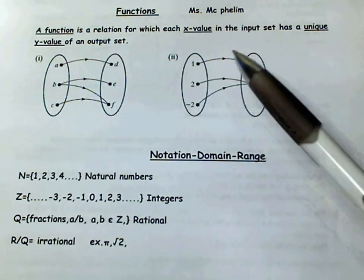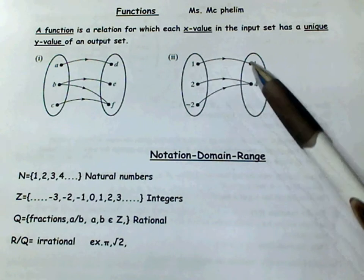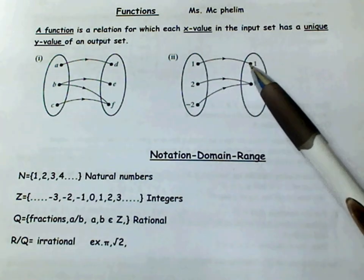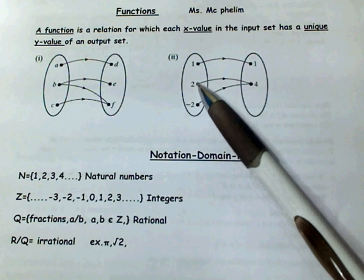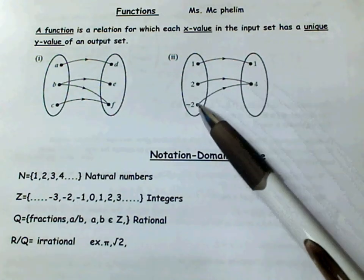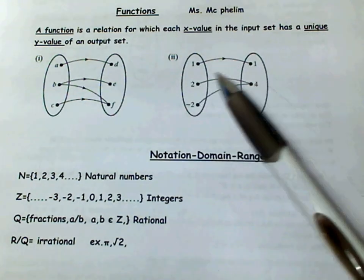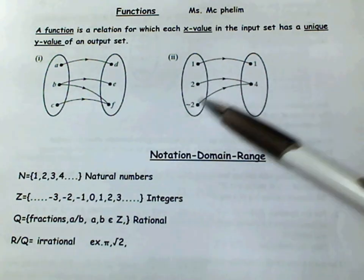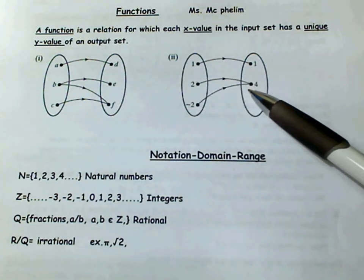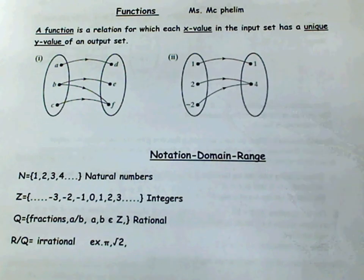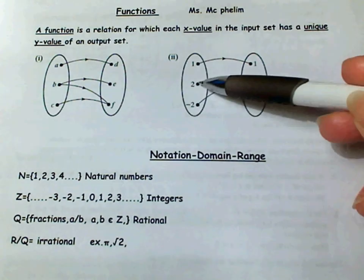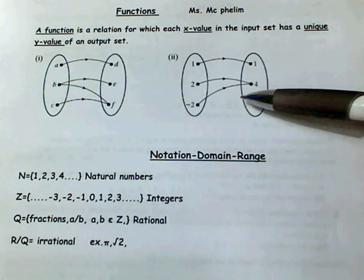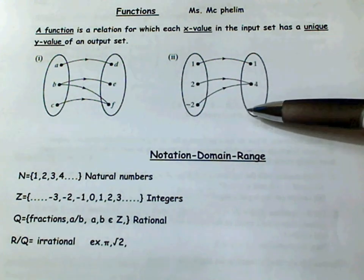And if you look at part 2, each of them, so 1 is the input, and 1 is the output, or our range over here. 2 goes to 4, and minus 2 also goes to 4. Now, the inputs have the unique output. It doesn't matter that they both go to 4. They both have the same output as long as it's just one value for each input. So part 2 is a function.